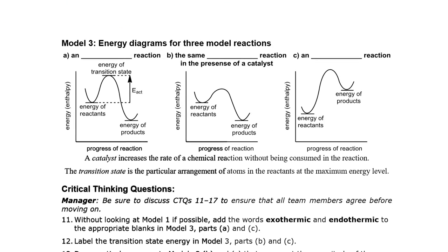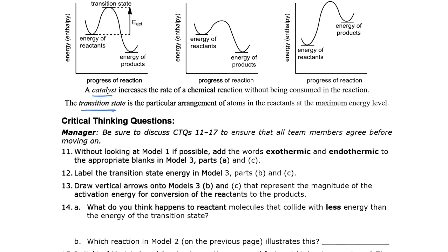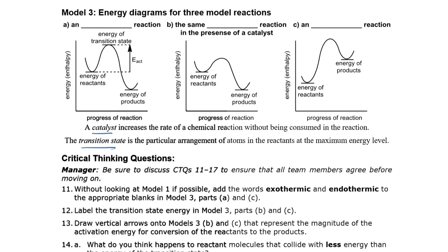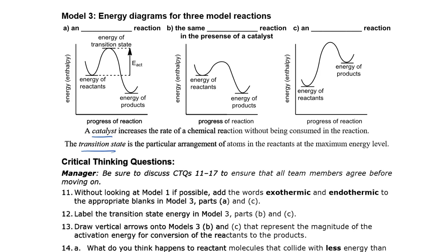Let's go on with Model 3: energy diagrams for three model reactions. I noticed there are some blanks to fill in later, and some statements at the bottom defining catalyst and transition state. Number 11 says: without looking at model 1 if possible, add the words exothermic and endothermic to the blanks where they belong in model 3. The answers are: exothermic for the first two and endothermic for the third.